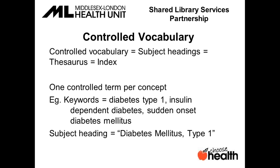The final and possibly most powerful tool is controlled vocabulary. Not every database has this. Controlled vocabulary is a list of set terms, one term per concept. Trained indexers review each article and assign controlled terms to express what the article is about. The purpose is to group articles on the same topic under the same controlled term and avoid the problem of synonyms. For example, type 1 diabetes can be expressed as diabetes type 1, insulin dependent diabetes, or sudden onset diabetes mellitus. There is only one controlled term in Medline — diabetes mellitus type 1 — and if you search with that controlled term, you will retrieve all articles indexed on type 1 diabetes regardless of what words the author used.